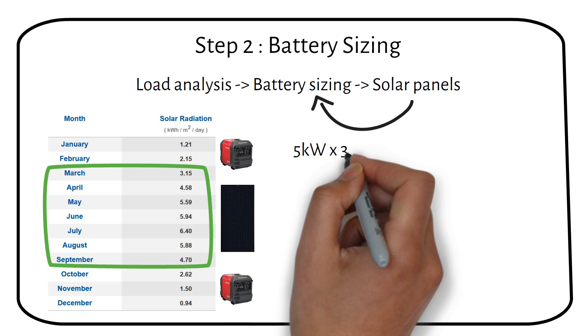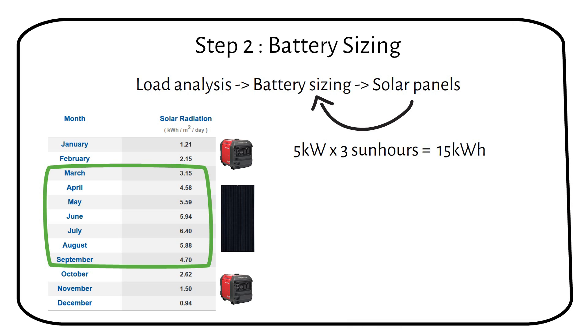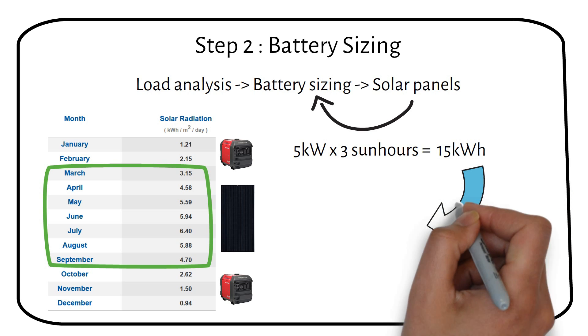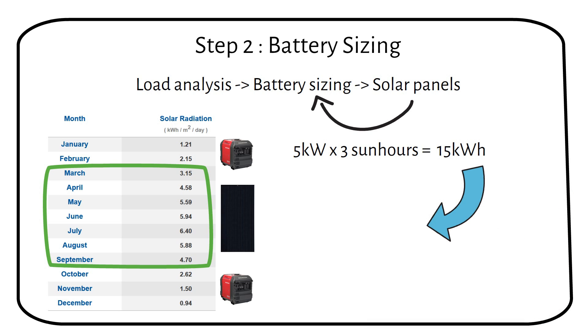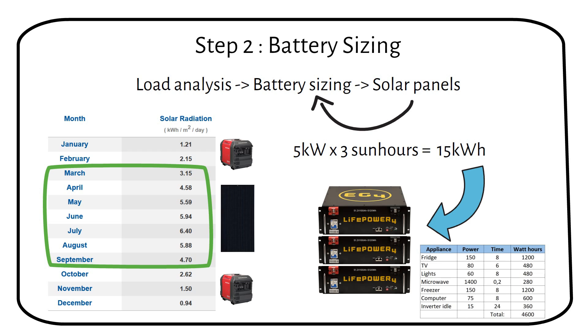5kW of solar panels will generate about 15kWh of energy per day. To store this energy, you would need a battery with a capacity of at least 15kWh. For a 48V system, this can be achieved with 3 48V 100Ah server rack batteries in parallel, each storing 5kWh. This battery capacity ensures you can store all the energy generated during the day, to use when the sun isn't shining. Keep watching to figure out how much power we can use daily.